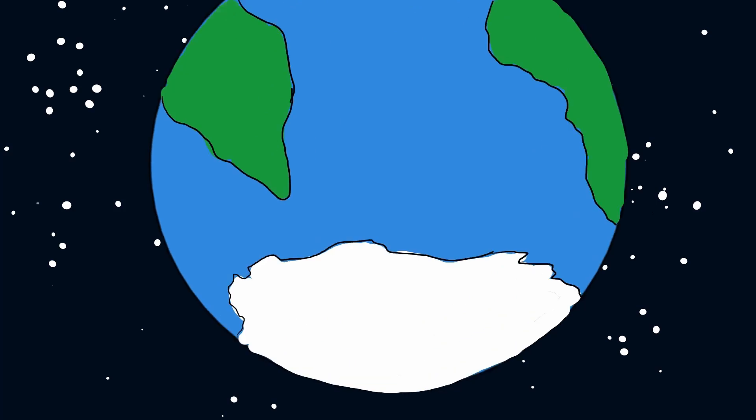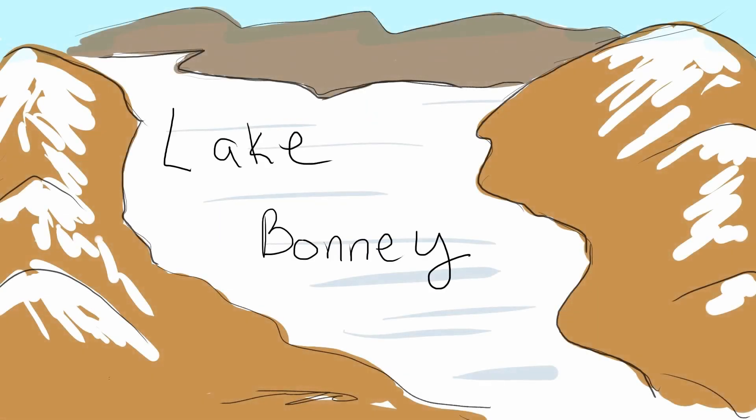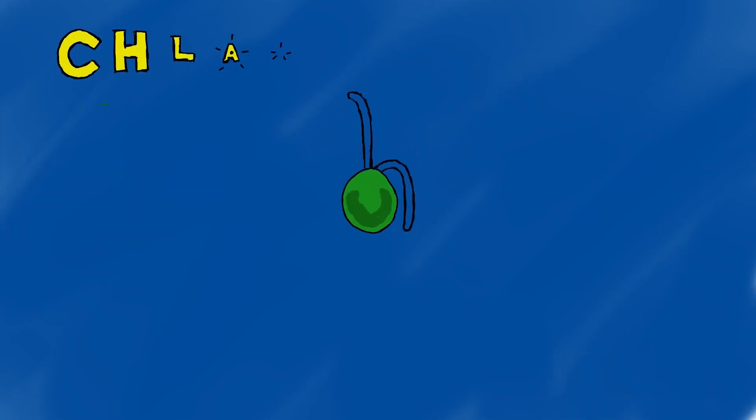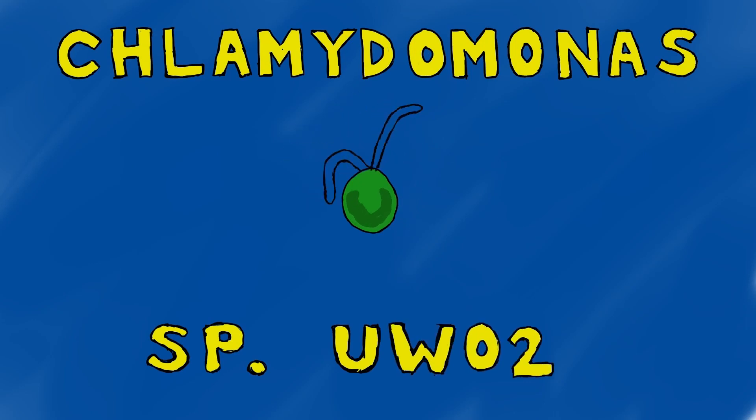Life can be found in the harshest environments. There is a lake in Antarctica called Lake Bonnie, and if we look 17 meters below its ice-covered surface, we will find a curious little green alga called Chlamydomonas sp. UWo-241.